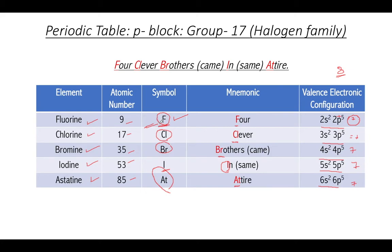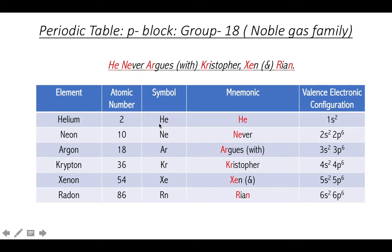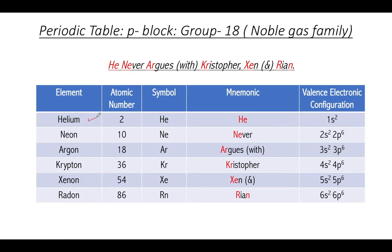The last group of the p-block is Group 18, the noble gas elements, having six members: helium, neon, argon, krypton, xenon, and radon, with atomic numbers 2, 10, 18, 36, 54, and 86. Their symbolic representations: helium is He, neon is Ne, argon is Ar, krypton is Kr, xenon is Xe, and radon is Rn.